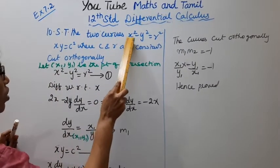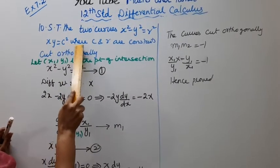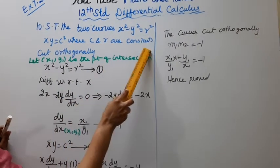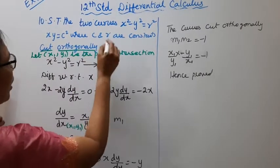Show that two curves x² - y² = r² and xy = c², where c and r are constants, cut orthogonally.